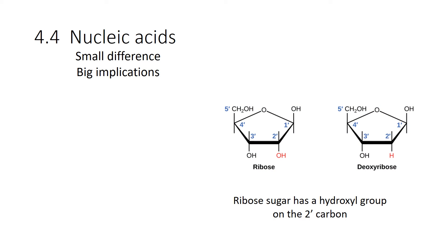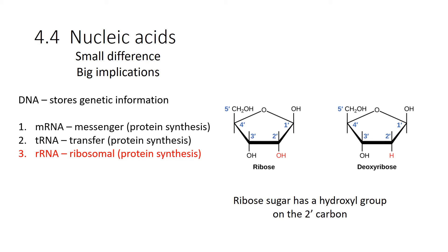Ribose sugar has a hydroxyl group, a little bit more reactive, a little less stable. That small difference actually has big implications. Whereas DNA stores genetic information, that's basically its only purpose. RNA is way more versatile. There's messenger RNA involved with protein synthesis. Protein synthesis means it's making proteins from amino acids. Transfer RNA, also involved with making proteins.